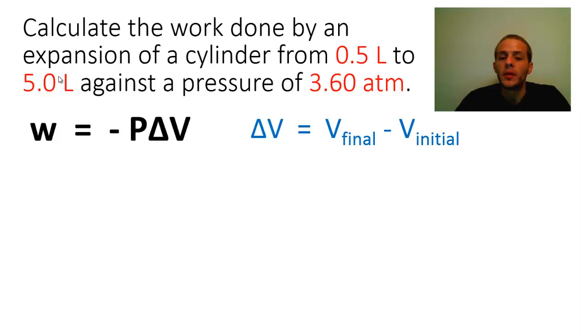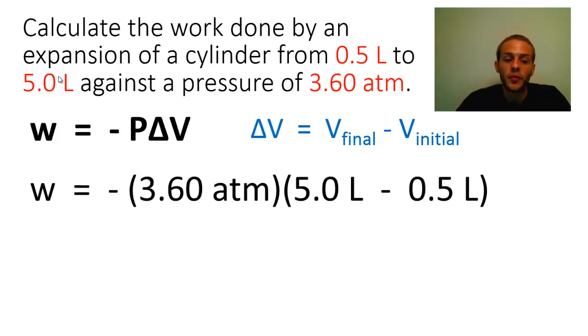Now the ΔV term is simply going to be the final volume minus the initial volume. Delta anything is going to be final anything minus initial anything, right? And so we just plug in our values. We get minus 3.60 atmospheres. We're going to multiply that by the difference: 5.0 liters minus 0.5 liters. And this turns out to be negative 16.2 liters times atmospheres.